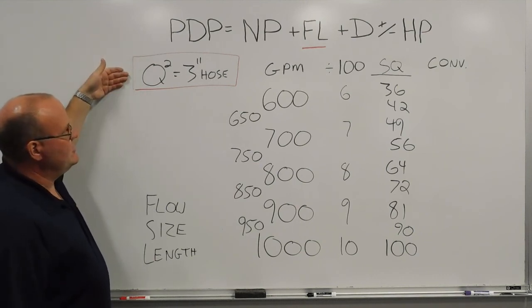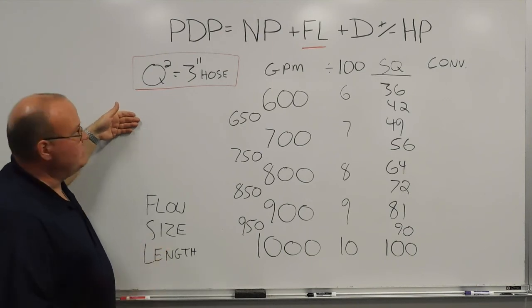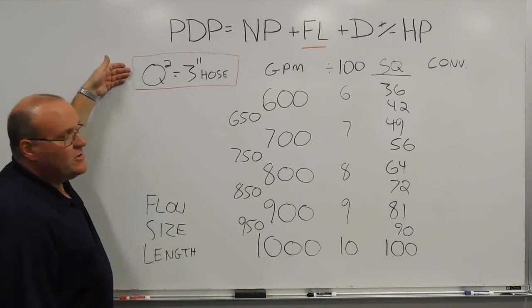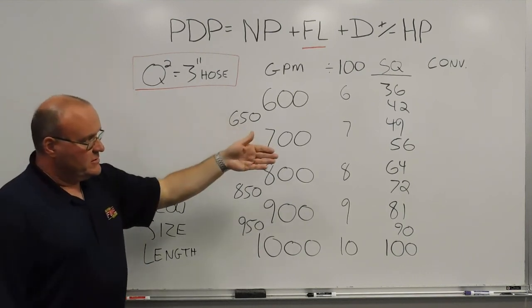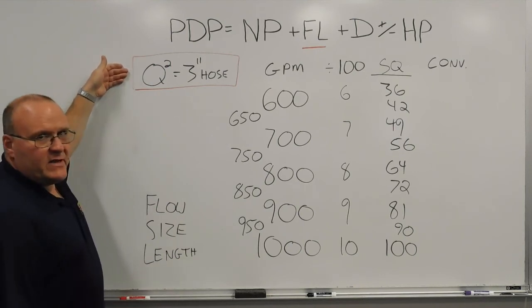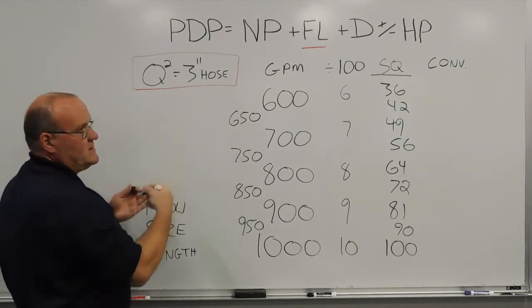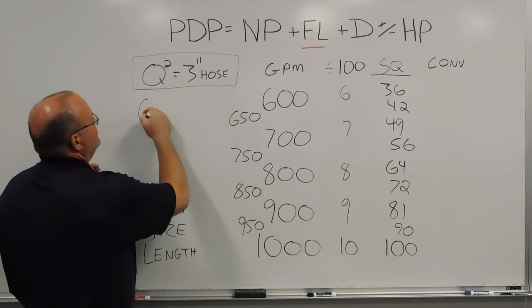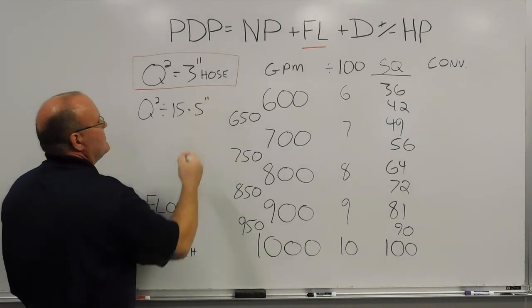When we went from 3 inch hose to 4 inch hose, hose size is bigger, friction loss decreases, we divided. So 3 inch hose to 4 inch hose was Q squared divided by 5. Now 5 inch hose, the friction loss is even lower, so we take that 3 inch hose number, Q squared, and we divide that by 15. So conversion factor, using this hand method, for 5 inch hose will be Q squared divided by 15, and that's your 5 inch friction loss number.